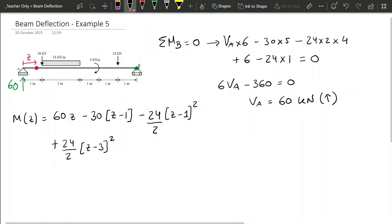Okay, so we're done with the UDL now. Next is a moment of 6. In this case, this moment of 6 will make this sort of rotation, so it will be tension on the bottom, on the right side of the moment, so it will be plus 6 and then z minus 4, and because it's a moment, it's to the power of 0.